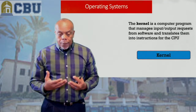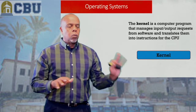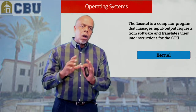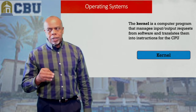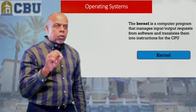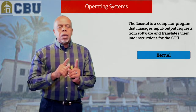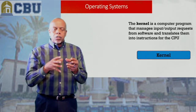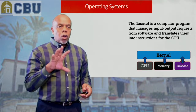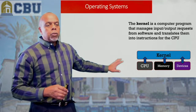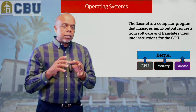Now let's dissect this operating system. At the core of any operating system — whether it's Windows, Mac, or Linux — is what we call a kernel, K-E-R-N-E-L. The kernel is a computer program that manages input and output for the software. It does the translation of software instructions — gets them ready for the CPU. Your kernel is what is actually talking back and forth between your CPU, memory, and all your devices. That is the heart of any operating system.